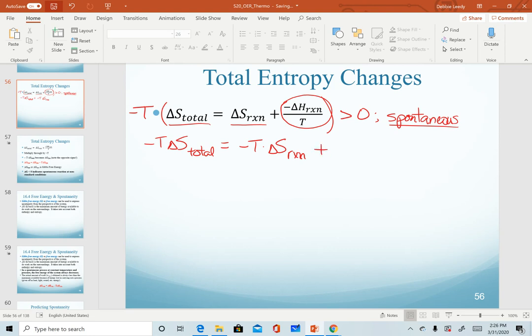I am multiplying each quantity through by a negative T. In this last one, it means my T is going to cancel, as will my negative sign. This new quantity of negative T times the delta S total is a quantity labeled as delta G. And delta G is referred to as Gibbs free energy.